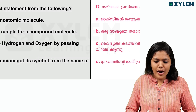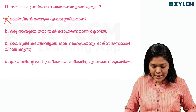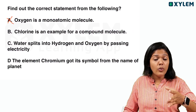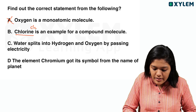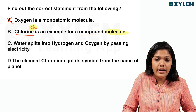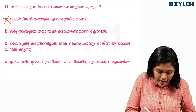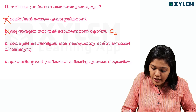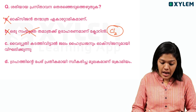Now, chlorine — is Cl2 a compound? No, we call it a Cl2 molecule. It is not a compound, it is an element, because it is chlorine. CO2, on the other hand, is a compound.